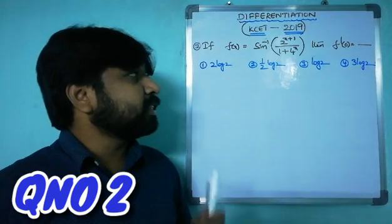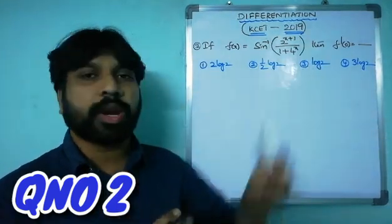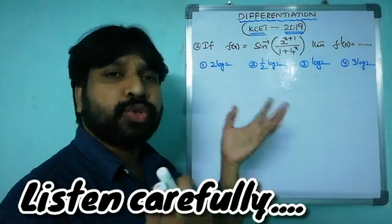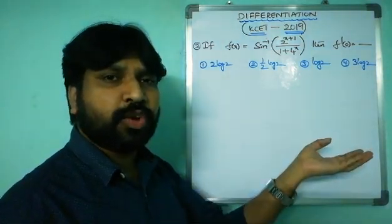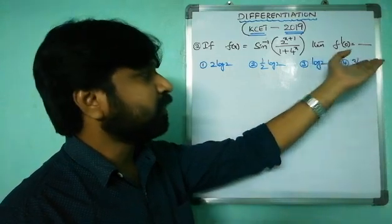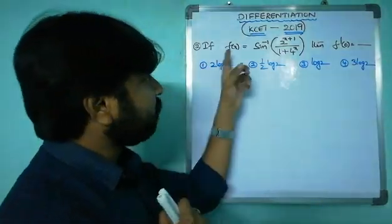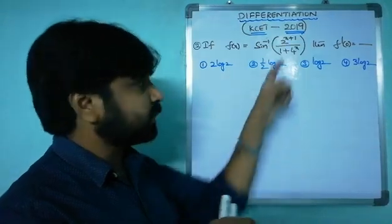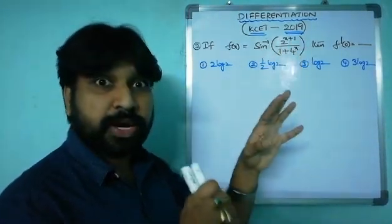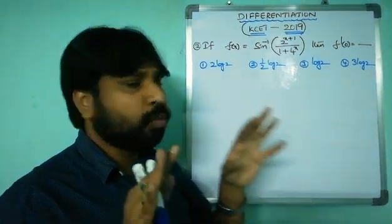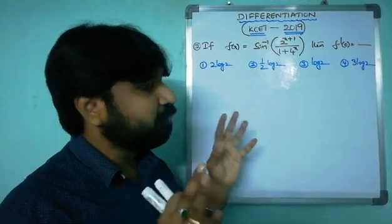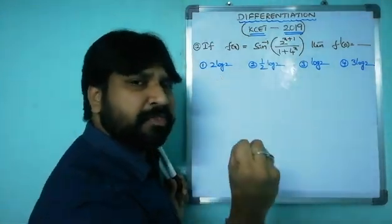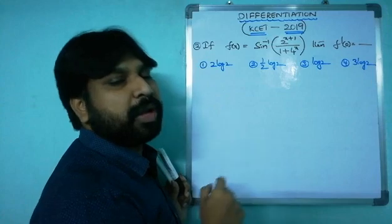Second question: f(x) = sin⁻¹(2^(x+1) / (1 + 4^x)), find f'(0). Strategy: find f'(x), then substitute x = 0. However, directly differentiating sin⁻¹ using the chain rule would be very complex. So the right approach is to simplify f(x) first before applying differentiation.